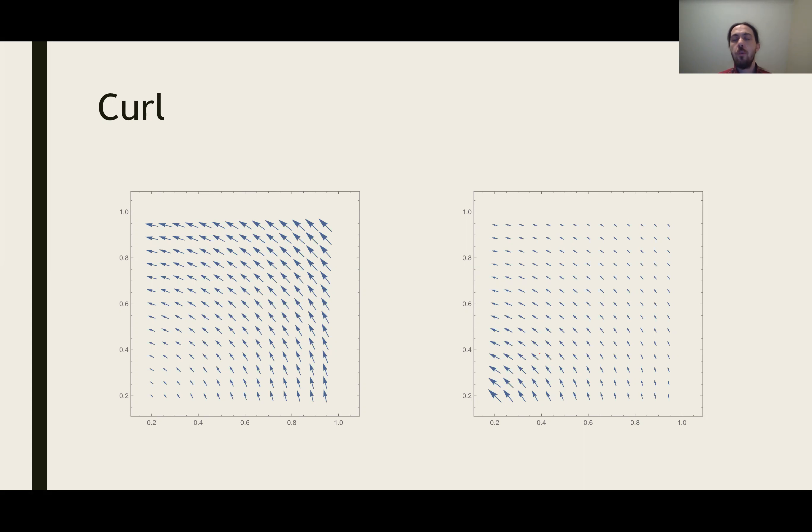Curl is the same way. Here are two vector fields, one from the example and one from the other example. This one has positive scalar curl. And this one has a negative scalar curl.